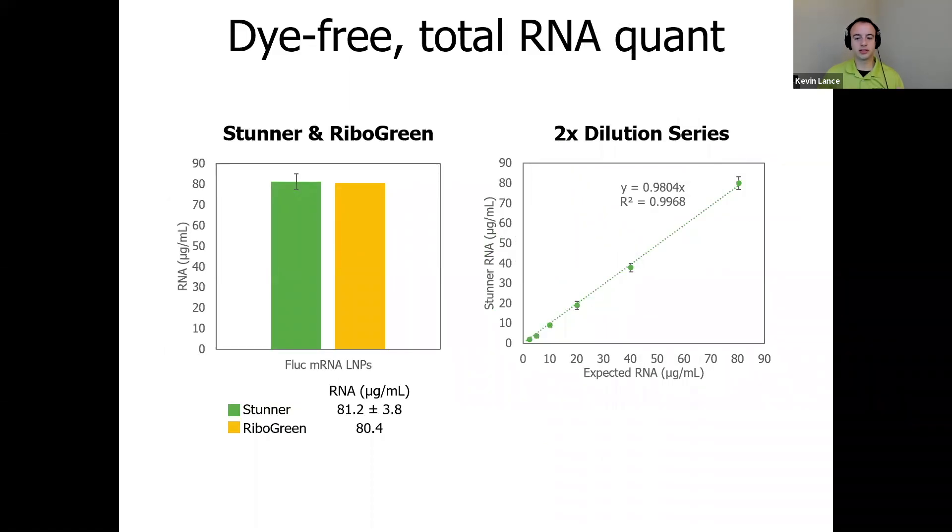Here we're taking a look at Stunner's total RNA concentration and how it agrees closely with total mRNA concentration determined by a RiboGreen assay. On the left, we can see the comparison between Stunner and that RiboGreen measurement. On the right, a two-fold dilution series of firefly luciferase mRNA LNPs showed highly linear results down to 1.2 microgram per mil. Error bars shown in the graph are plus or minus one standard deviation. So having both the slope and the r-squared close to one is exactly what you want in this experiment.